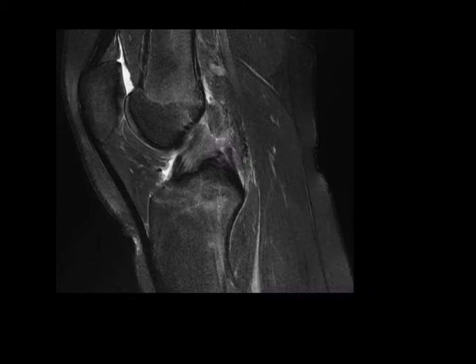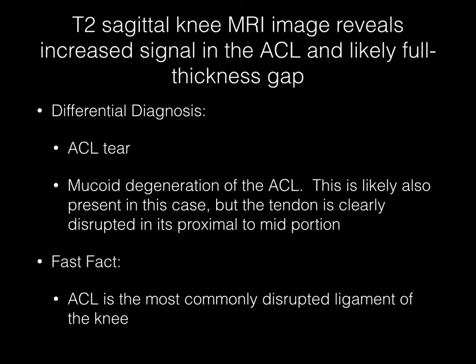Now pause your media player. This sagittal T2-weighted MR image of the knee reveals increased signal in the ACL and likely a full thickness gap. The diagnosis here is ACL tear. Mucoid degeneration of the ACL could also be mentioned, but the tendon is clearly disrupted in its proximal to mid portion on this image.